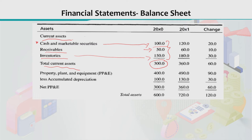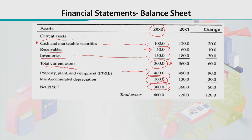After current assets, we move to non-current assets — those not convertible within one year. We account for property, plant and equipment (PP&E), which has a gross value of $400 million for year 2000. After subtracting depreciation, the net property, plant and equipment value is $300 million. Adding current assets and net PP&E together, total assets equal $600 million for year 2000.